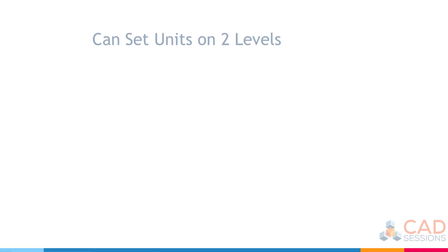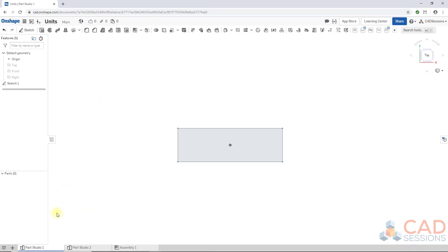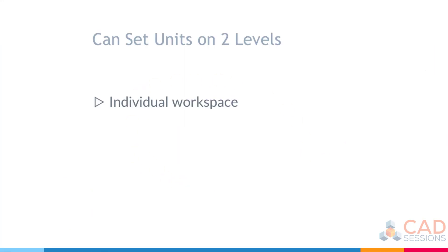With units, the important thing to note is that there are two ways you can set up your units in Onshape, and depending on which method you use, it's going to give you different results. First, there is the option to set up your units on an individual workspace level — so how you want your units to apply just in one active workspace. The second way is on an account-wide level, which will change how your units are displayed across your whole Onshape account. The workspace settings will override that whole account setting.